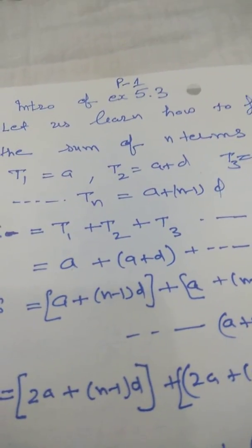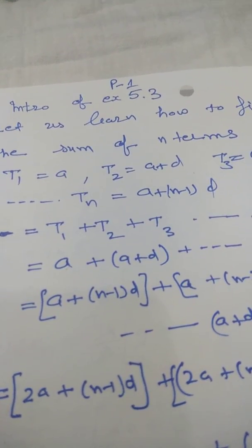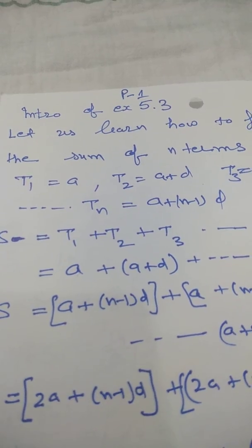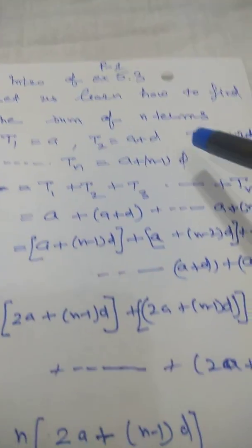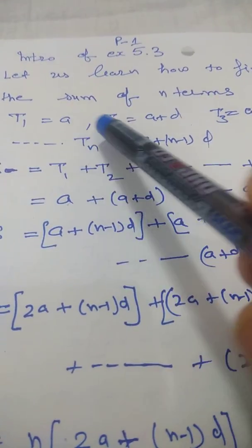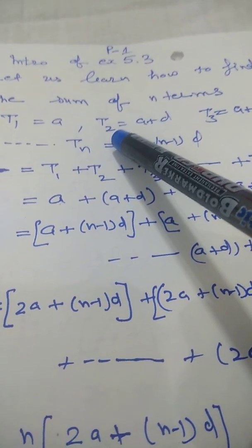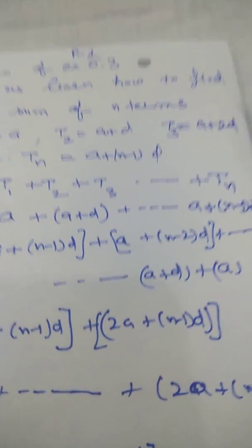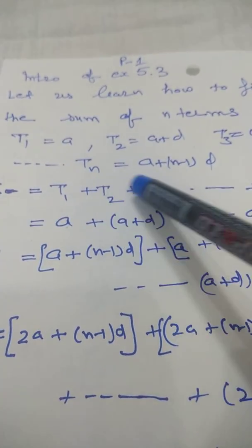Hello students, today we shall learn the introduction of Exercise 5.3. Let us learn how to find the sum of n terms. You know very well t1 is equal to a, meaning the first term. The second term can be written as t2 = a + d, t3 can be written as a + 2d, and so on.